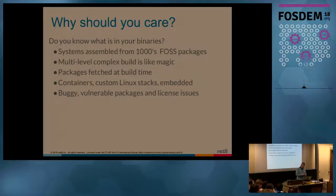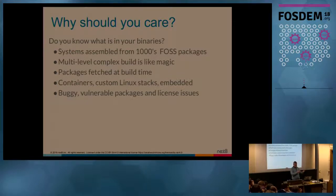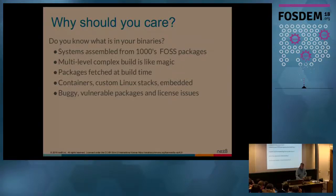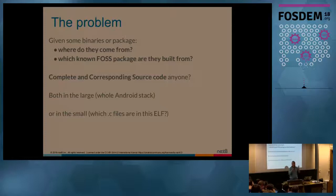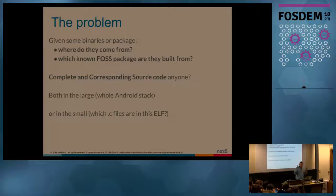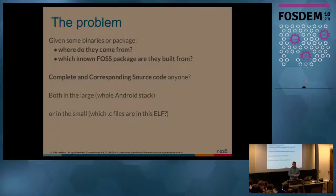There are other applications: we're all eventually redistributing vulnerable code, integrating vulnerable packages. There may be licensing issues where things like linking dynamically versus statically when it comes to GPL have their own importance. So given some binary or package, I want to know where they're coming from and which known open source packages they're built from. I also want to trace exactly what's the complete corresponding source code - more of a legalist term that applies to the GPL - and I want to do that either for large complex builds like a whole device, or for single binaries.